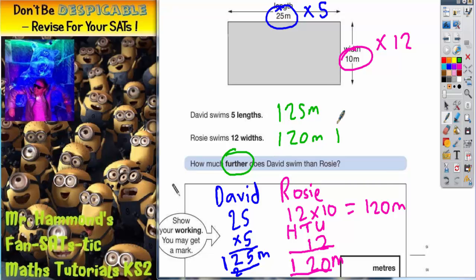Well, you can probably do that in your head. It's an extra 5 metres. So the final answer in the answer box needs to be 5 metres.